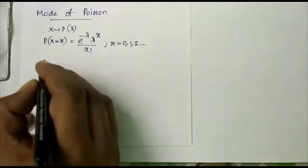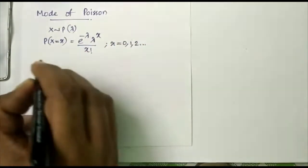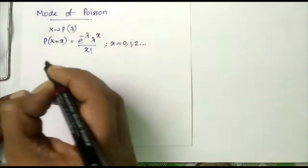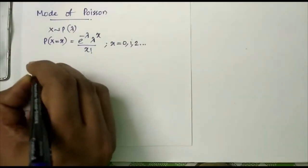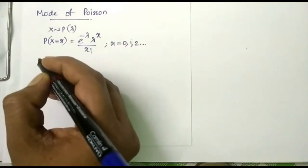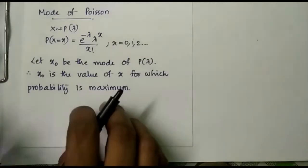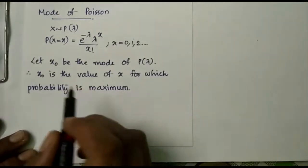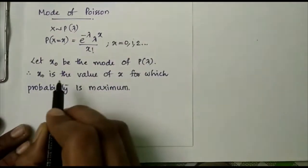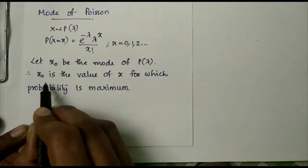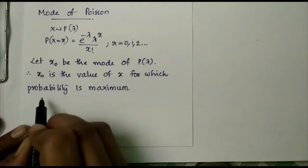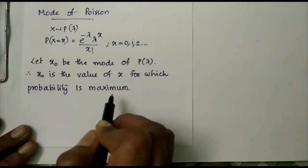Let x0 be the mode of the Poisson(λ) distribution. That is, x0 is the value of x for which the probability is maximum.